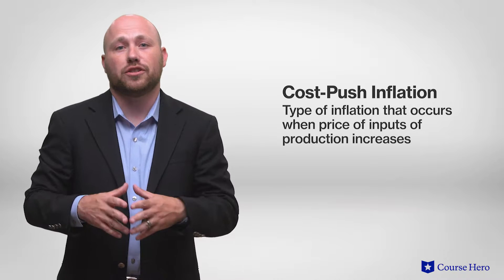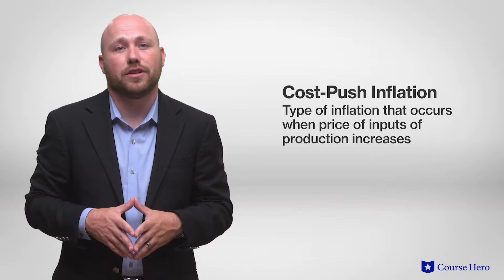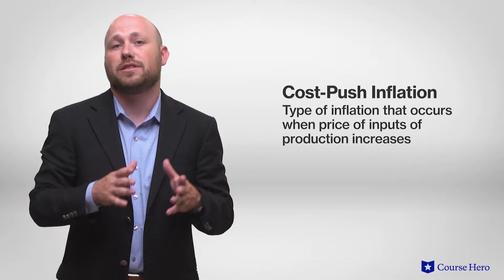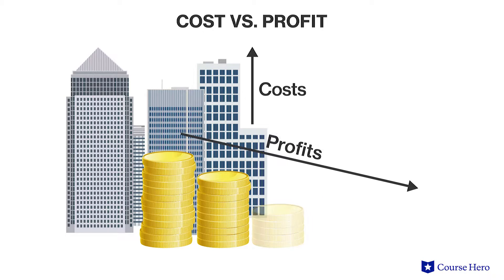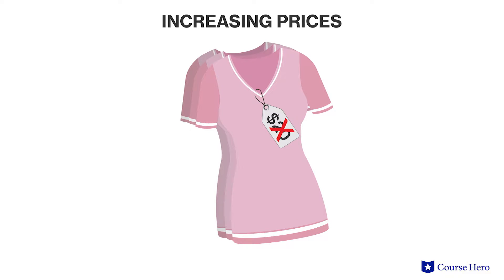Cost-push inflation is a type of inflation that occurs when the price of the inputs of production increases. If a company's costs increase, then profits decrease. To maintain profits, companies may choose to increase the price of their goods and services, which can then increase company revenues. However, increasing prices contributes to inflation.